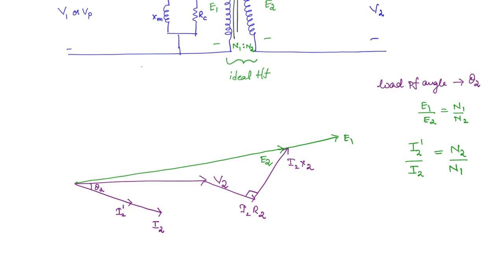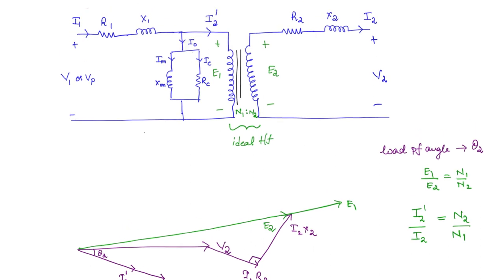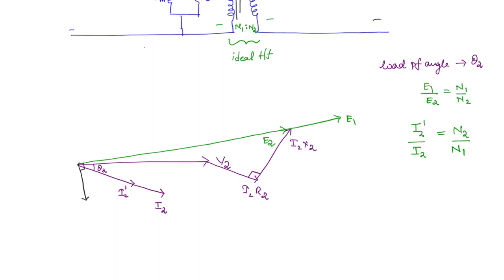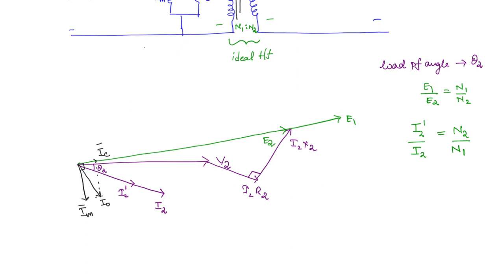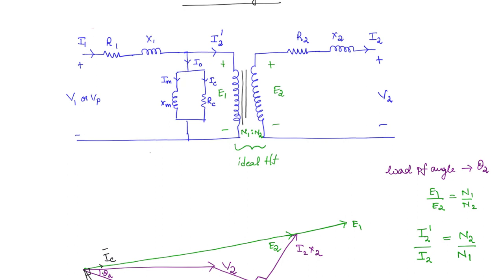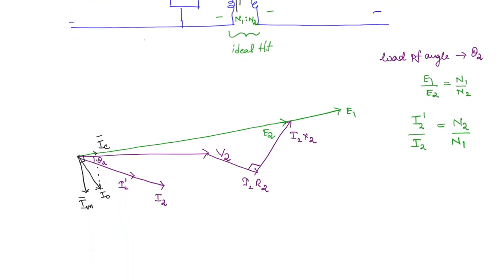Next, we want I0. I0 can be divided into IM and IC. IM is going to lag E1 by 90 degrees — pure inductor. E1 is this phasor, so lagging 90 degrees here we can draw the magnetizing component. So this is IM. The core loss component IC is going to be in phase with E1, and its magnitude is going to be very small. So this is IC. If you add both of them, you are going to get the no-load current I0. We have I0 and I2 dash marked. Now, I1 will be the phasor sum of I0 and I2 dash, so adding these two you are going to get current I1.